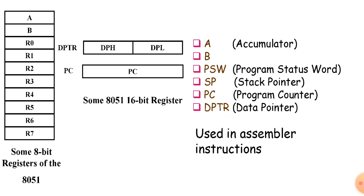The four banks are: Register Bank 0, Register Bank 1, Register Bank 2, and Register Bank 3. Depending upon the user's need, you can select any one of the register banks inside the internal RAM of the 8051. All of the registers are used to store data temporarily.